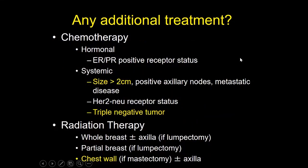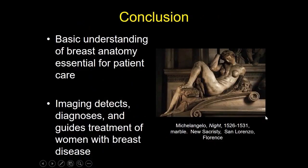Does she need additional treatment? Because of the size of her tumor and the fact it was triple negative, this patient did receive systemic chemotherapy and also chest wall radiation. In conclusion, I hope you now have a much better understanding of how breast anatomy plays into how we care for patients, and how we can use imaging to detect, diagnose, and guide the treatment of women with breast disease. Thank you very much.